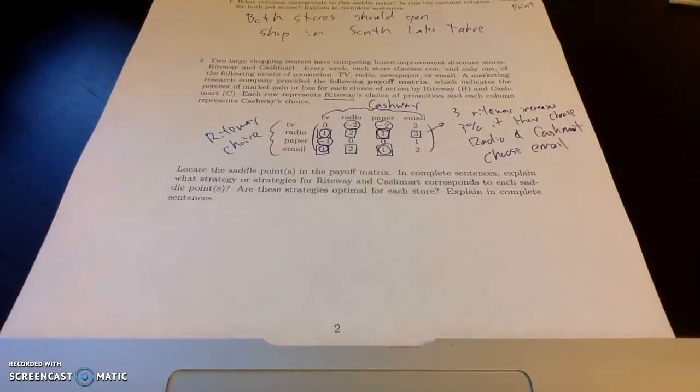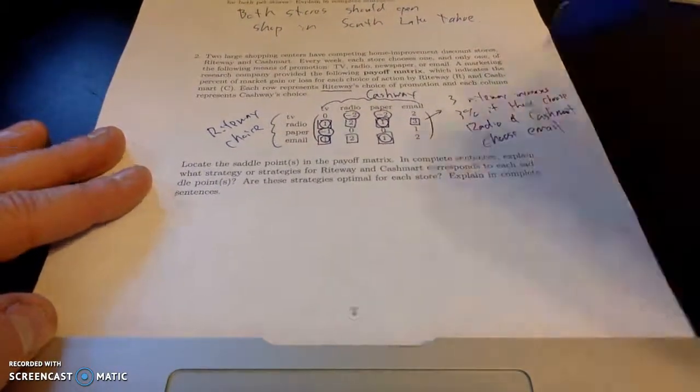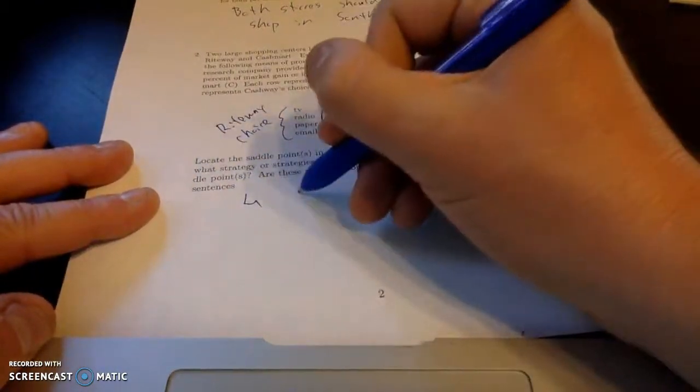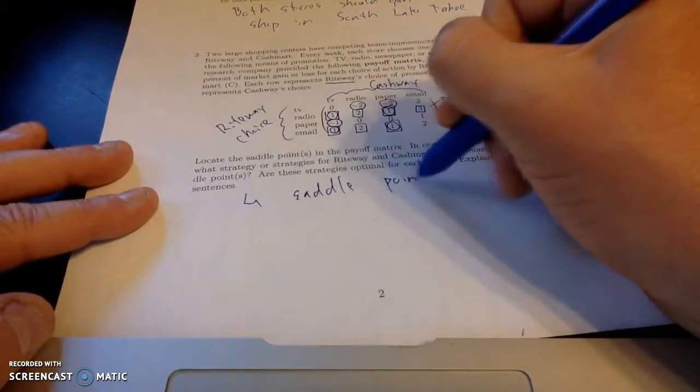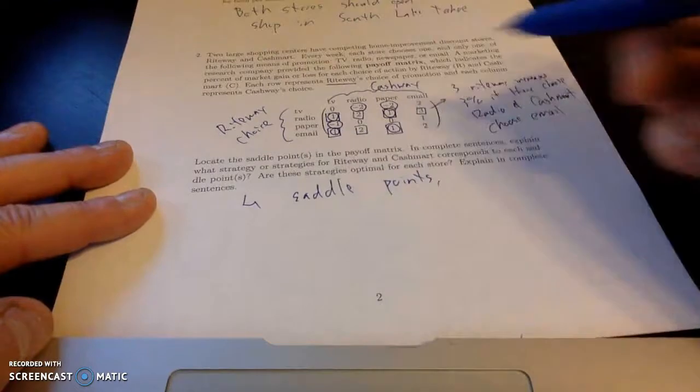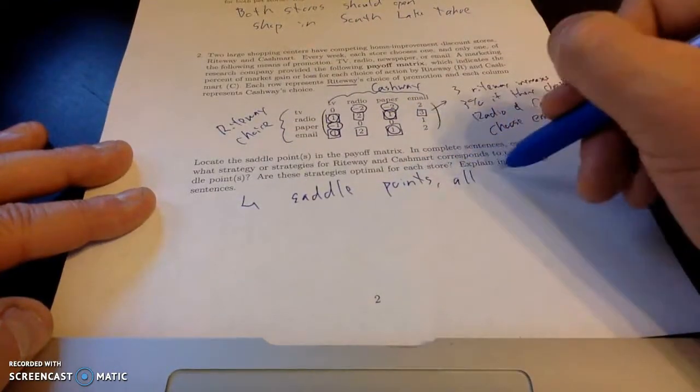So let's locate the saddle points. And we actually get 4 of them. There are 4 saddle points. The saddle points do not have to be unique. But notice the values are.